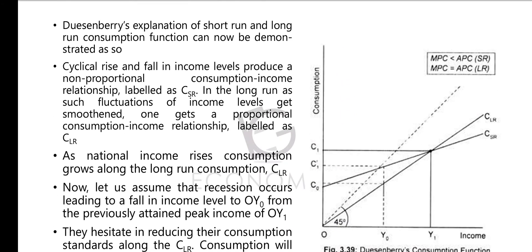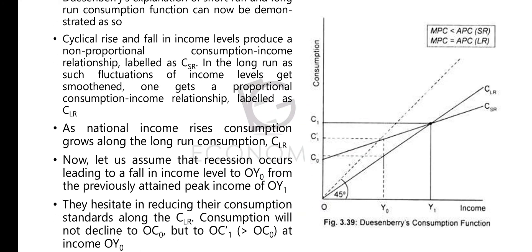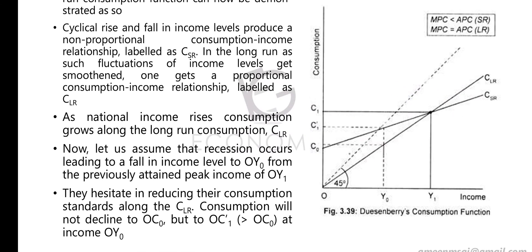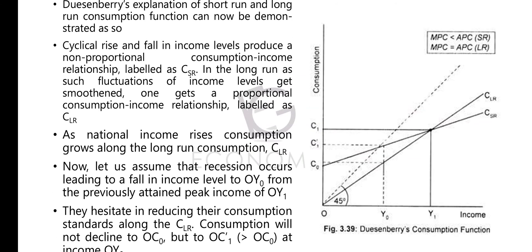Let's discuss this graphically. Duesenberry's explanation of the short-run and long-run consumption function can be demonstrated as follows. Cyclical rises and falls in income levels produce a non-proportional consumption-income relation. In the short-run, due to habit, when income decreases, consumption does not immediately decrease, and when income increases, consumption does not immediately increase. So in the short-run, we have a non-proportional consumption-income relationship, and in the graph this curve is labeled CSR — the short-run consumption function.